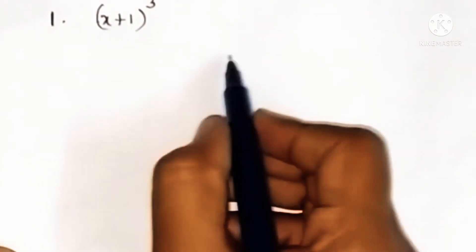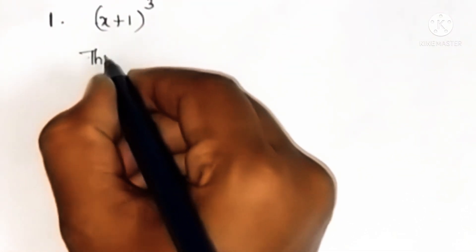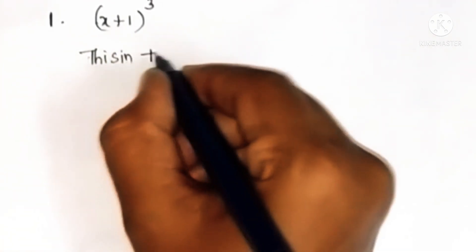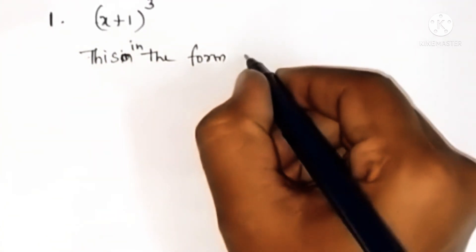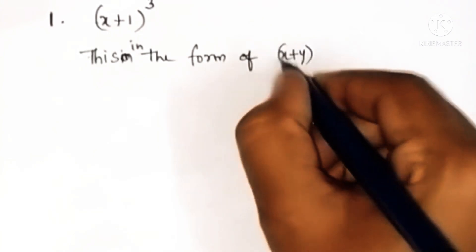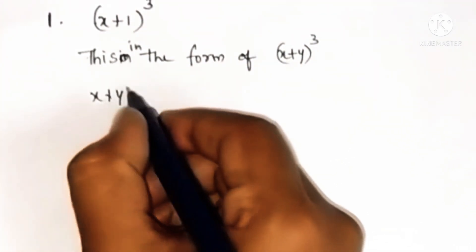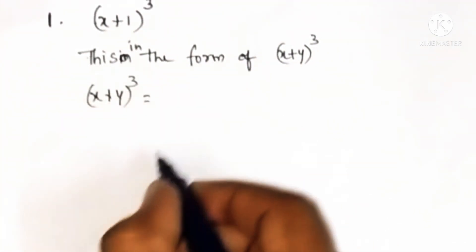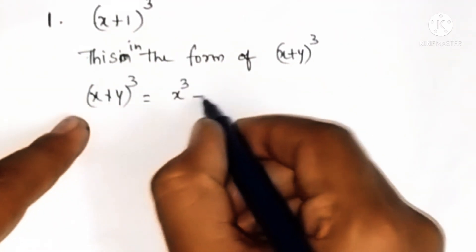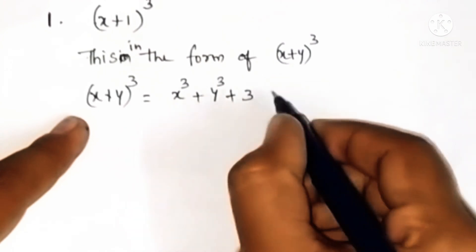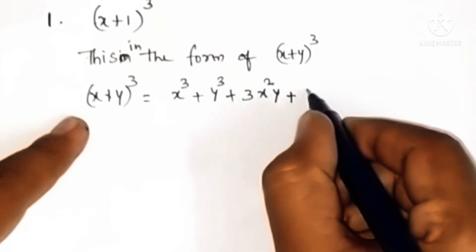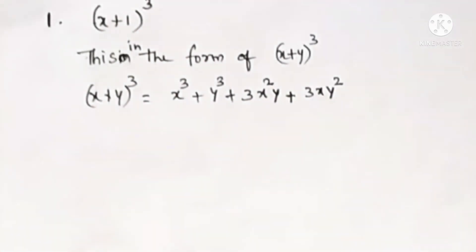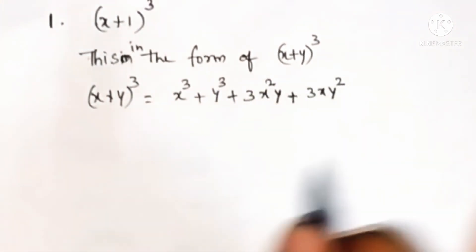Just by seeing this problem you can identify this is in the form of x plus y whole cube. So what is the formula for x plus y whole cube? First give cube to the x, next cube to the y, then 3 x squared y and 3 x y squared. This is the formula — each term must have degree 3.